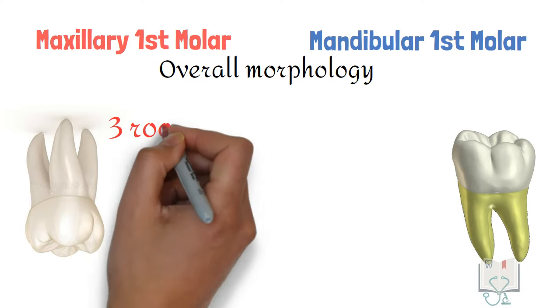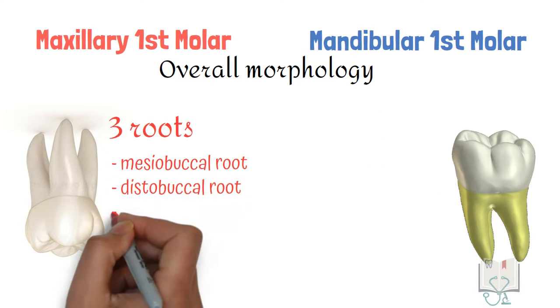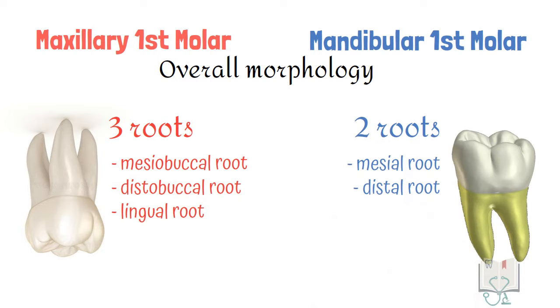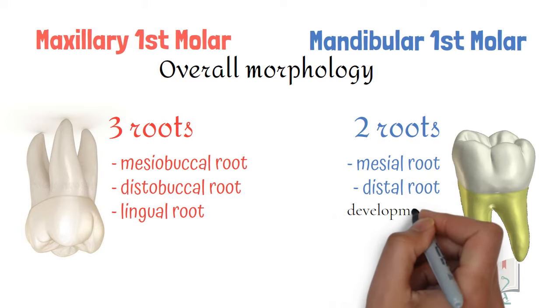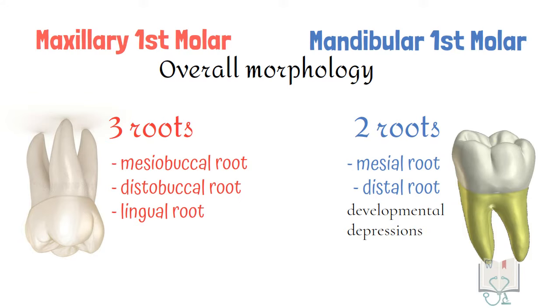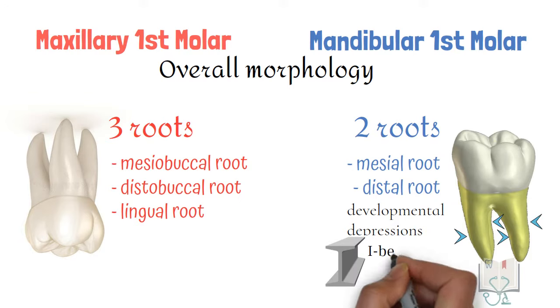Maxillary first molar has three roots whereas mandibular first molar has two roots. Moreover, in mandibular first molar, both roots have a developmental depression on their mesial and distal surfaces, giving them an eye-beam appearance.